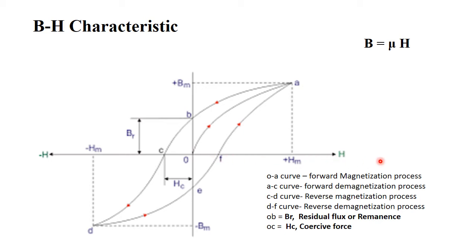The BH curve is a very important characteristic for any magnetic material, drawing the curve between B (magnetic flux density) and H (magnetic field strength) using the relation B = μH. As you increase H (x-axis) by increasing current, you measure the flux density B on the y-axis. Initially the flux increases linearly, but after the knee point saturation comes and flux is no longer proportional to current. After saturation, flux will not increase further as you increase the current.